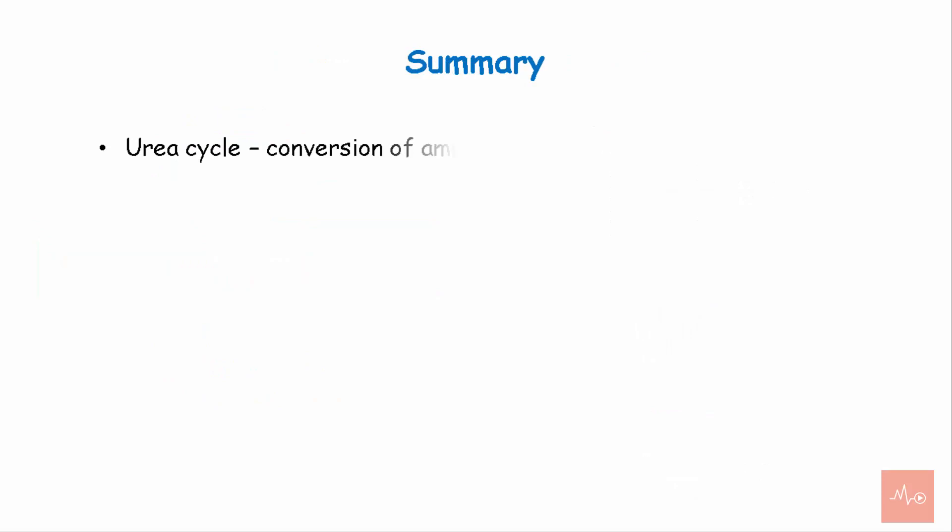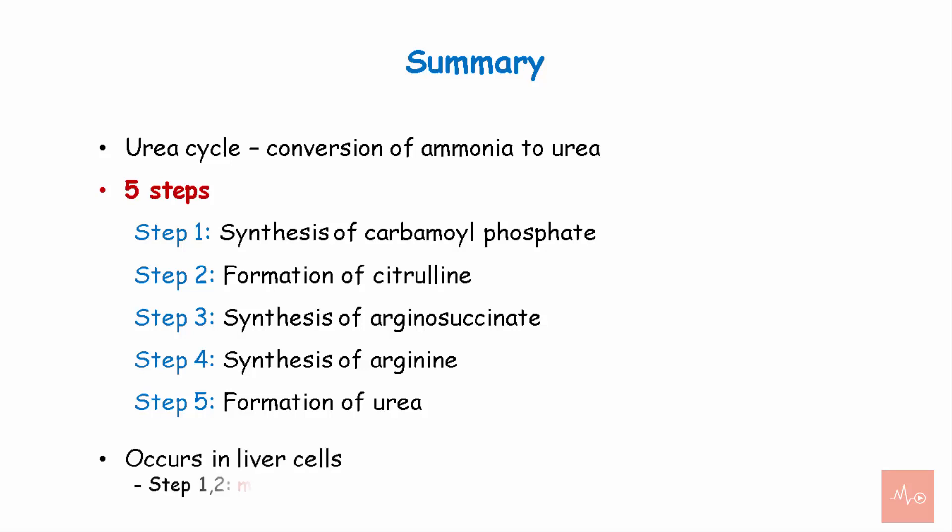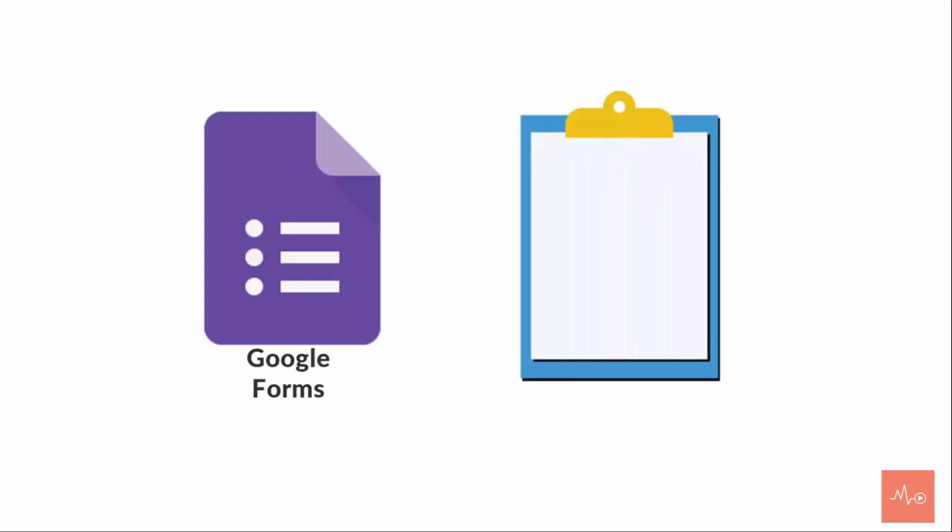To summarize, urea cycle is a conversion of ammonia to urea which takes place in liver. It involves five steps: step 1 is synthesis of carbamoyl phosphate, step 2 is formation of citrulline, step 3 is synthesis of arginosuccinate, step 4 is synthesis of arginine, and step 5 is formation of urea. These steps occur in liver cells - step 1 and 2 in the mitochondria, and step 3, 4, and 5 in the cytoplasm.